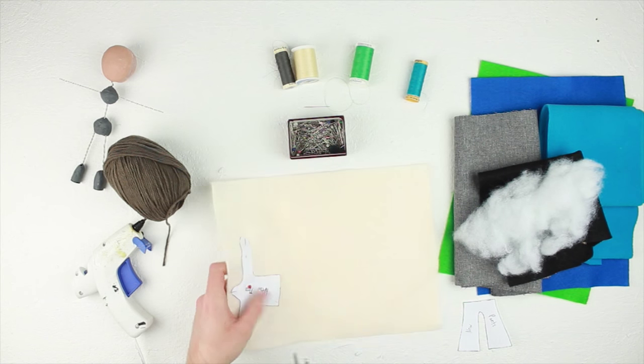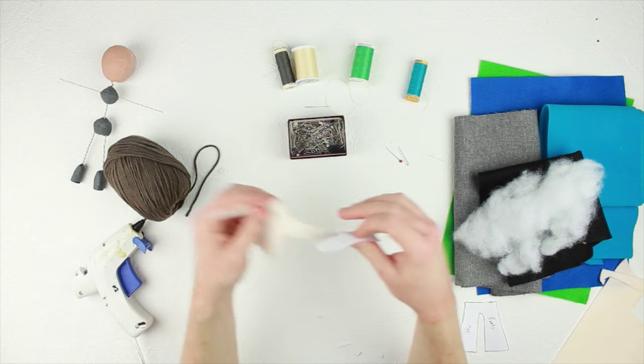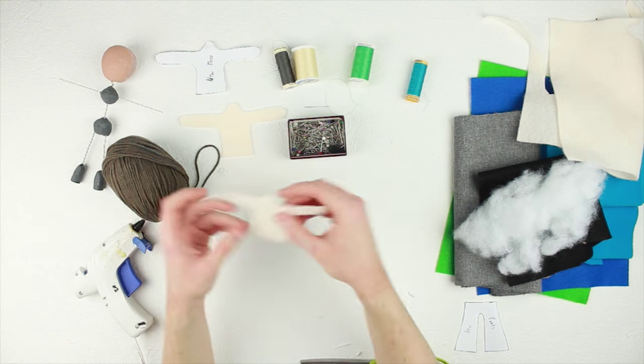So cut out the torso pattern and pin it to the skin tone fabric so it stays in place while you're cutting out the necessary pieces. You're gonna need two pieces, one for the front and one for the back.